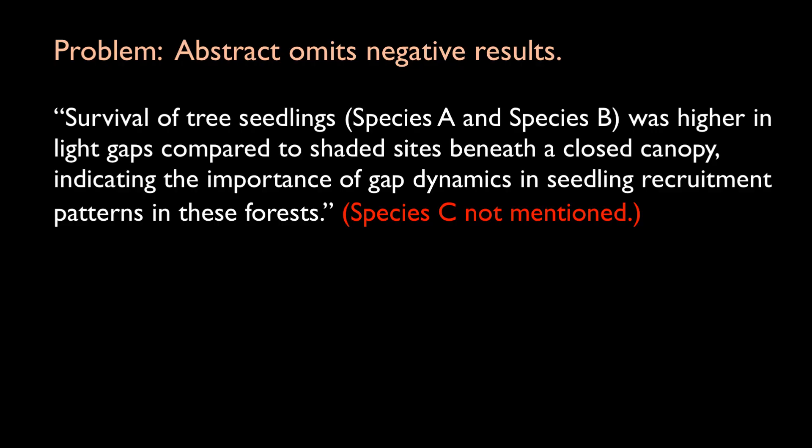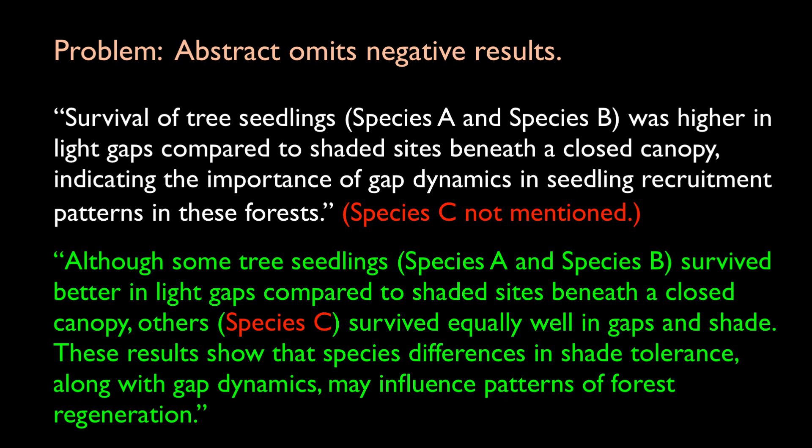Related to this is the case in which the authors fail to point out negative results that are important to the overall interpretation of the data. Here the authors leave out the fact that a third species, species C, survived equally well in gaps and in the shade. Perhaps they thought that this negative finding for species C was problematic and omitted mentioning it in the abstract. In fact, by reporting both positive and negative results, the authors provide a more accurate and more interesting picture of the outcome.